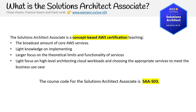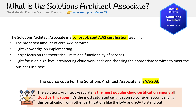The course code for the Solutions Architect Associate is SAA-C03. Make sure when you book your exam that the course code matches what we show here, because this is what this course is optimized for. The Solutions Architect Associate is the most popular cloud certification among all cloud certifications, but it's also the most saturated — so consider accompanying it with other skills.